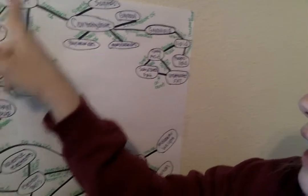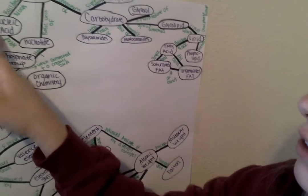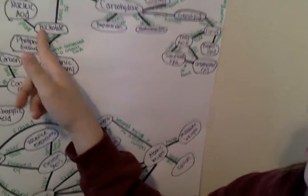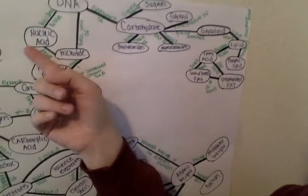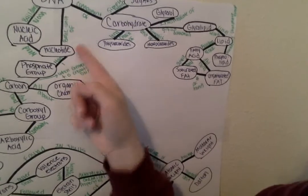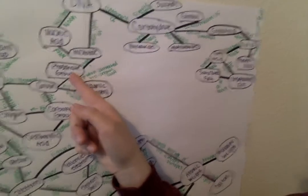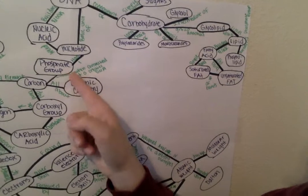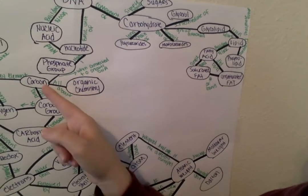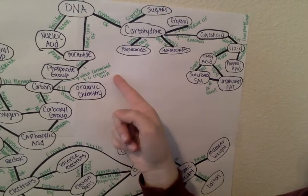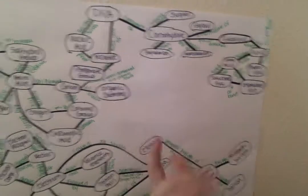Going back to DNA, if we go down to nucleic acid — nucleic acid is also connected to a nucleotide because you need a nucleotide to create a nucleic acid. In front of a nucleotide, you have a phosphate group in each nucleotide. And then a phosphate group, when connected to a carbon, creates DNA. So when you have phosphate group and carbon, they help create DNA.